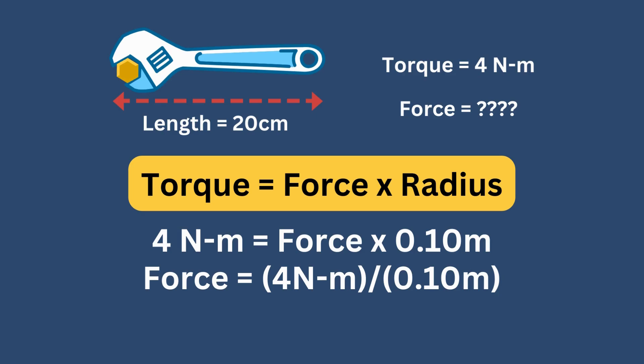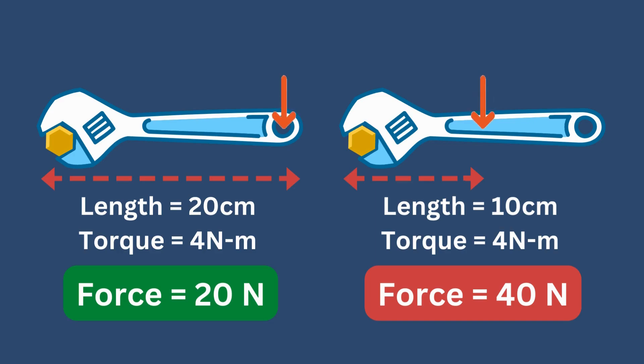Going back to our equation, force equals 4 newton meters divided by 0.10 meters. Then, we can solve for the amount of force, which equals 40 newtons. Comparing both situations, it is clear that holding the wrench on the edge will require lesser force to rotate the bolt than holding the wrench in the middle.